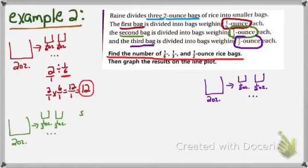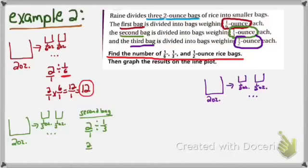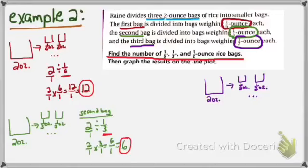For the second bag, again I started with two ounces divided into equal groups of one-third ounce each. Two divided by one-third: keep 2/1, change division to multiplication, flip 1/3 to 3/1. Multiply numerator times numerator: 3×2=6; denominator times denominator: 1×1=1. Six over one equals six. So I have six one-third ounce bags from the second bag of rice.